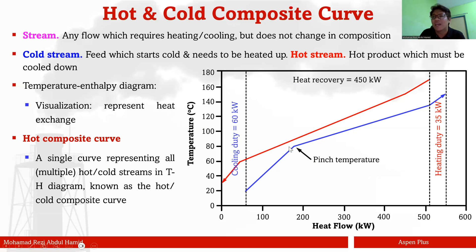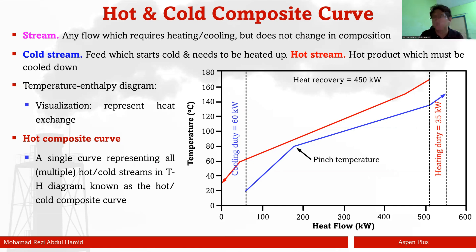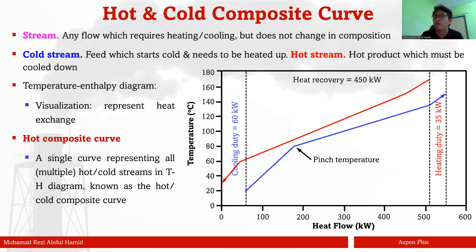Now that we know what a stream means — hot and cold — and where the composite curves are drawn, the next thing to define is the hot composite curve. In industry, when you do heat integration, you are dealing with more than one stream — maybe two, three, four, five, six. The same goes for cold streams.